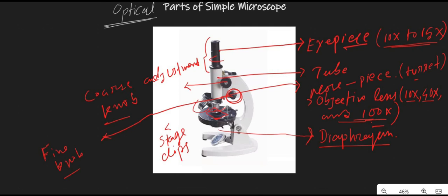There is another part called the condenser, which is located beneath the stage. The condenser contains a lens which is used to focus the light on the sample. A 400x power condenser lens is used for this purpose.